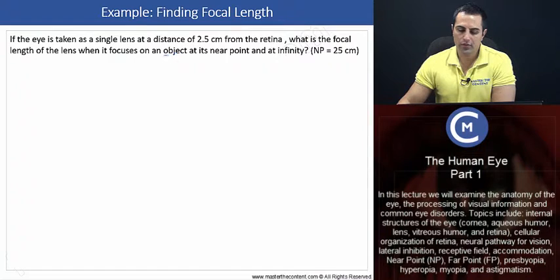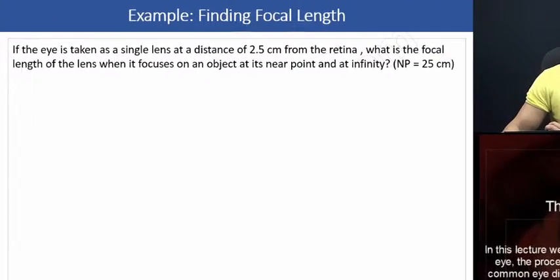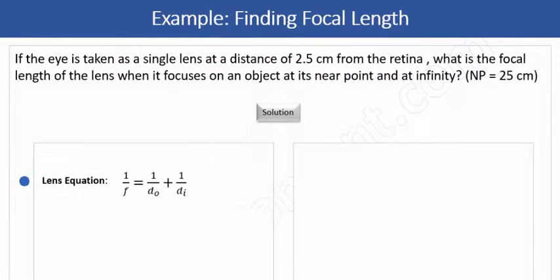So what we'll do is we'll first find the focal length for when the object is at its near point and then for when the object is at infinity. Let's get started and we'll begin with the lens equation. Coming over here, the lens equation is as follows.